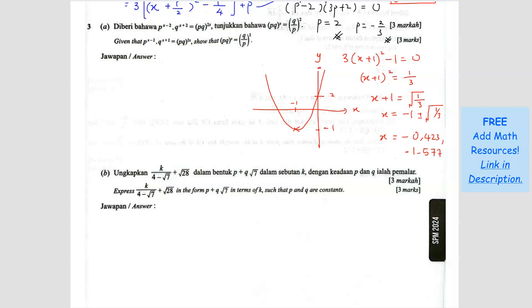Question number 3. Given that, let me just copy this: p^(x-2) × q^(x+2) = px^(2x). We want to show that pq^x equals q over p squared. So we have to turn this into this.